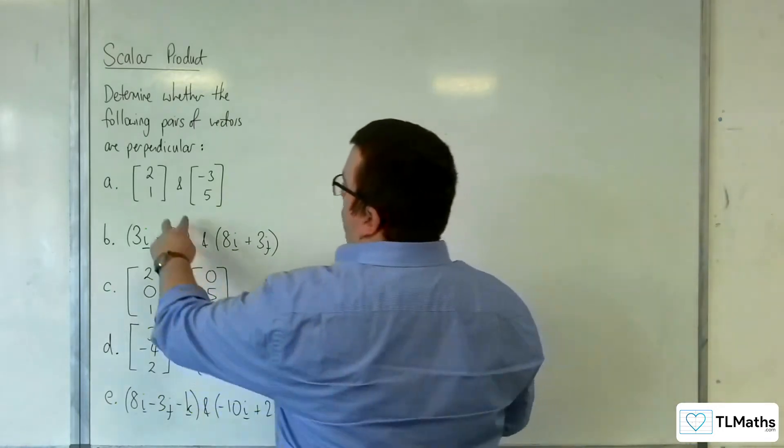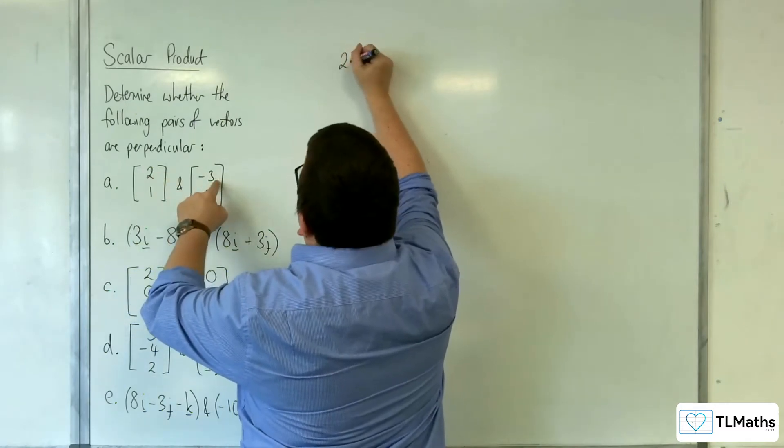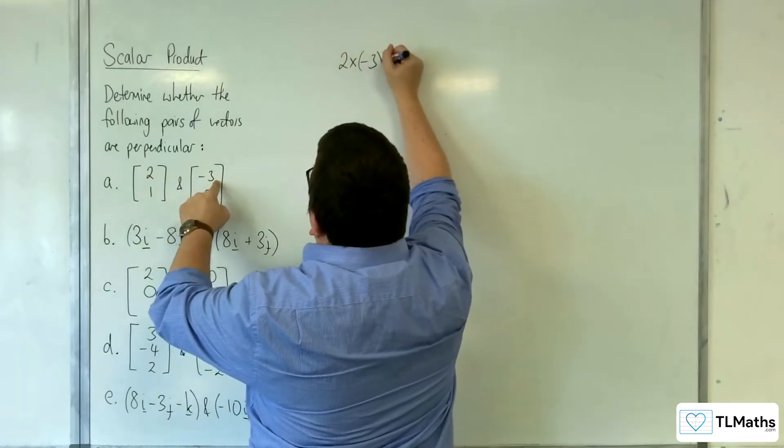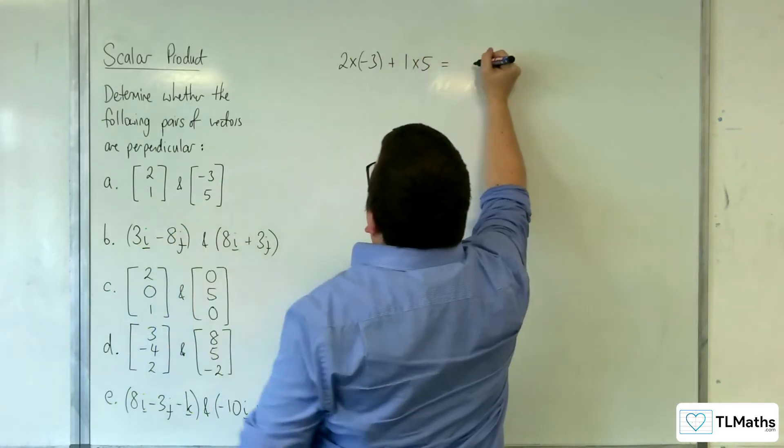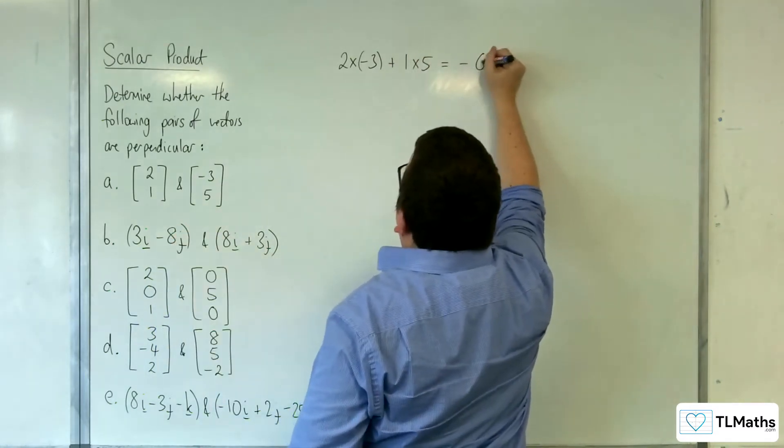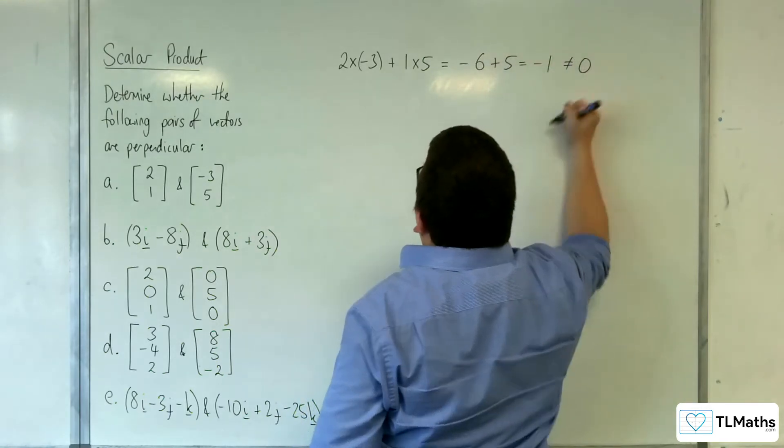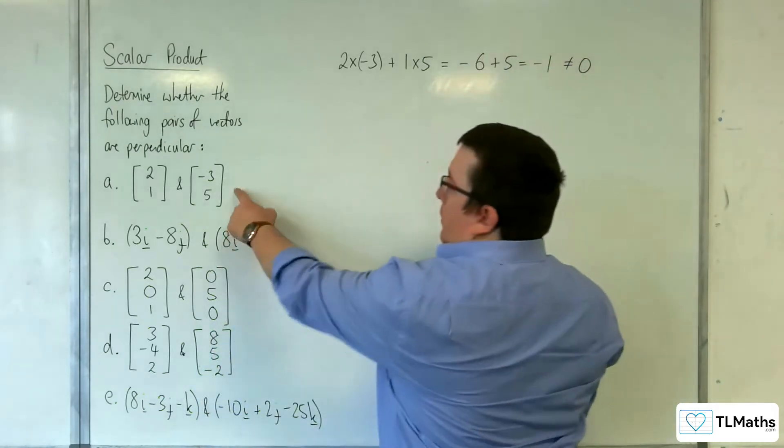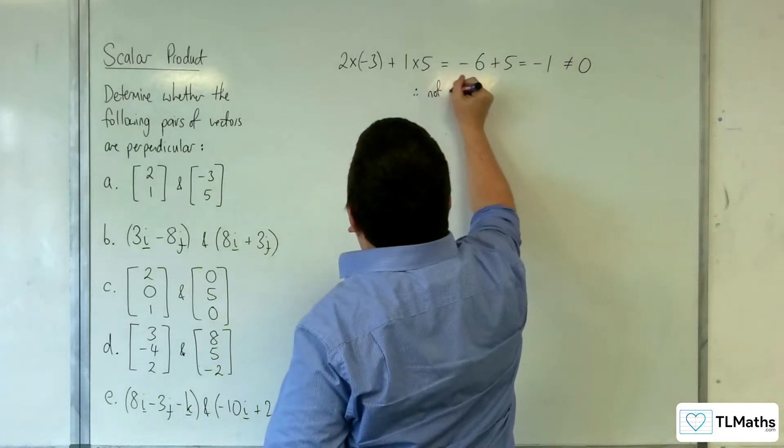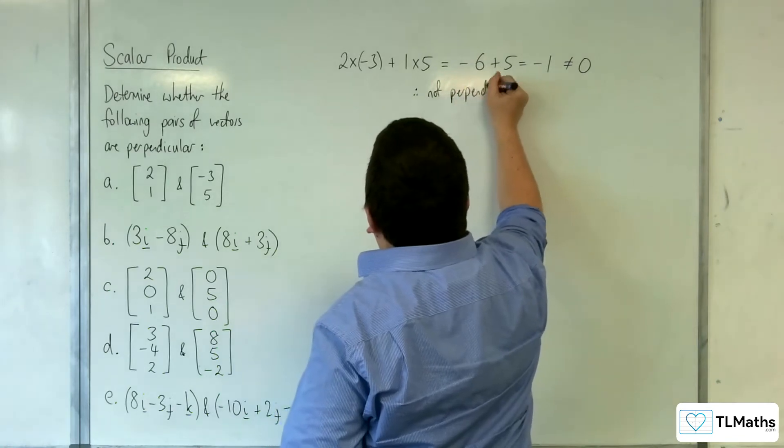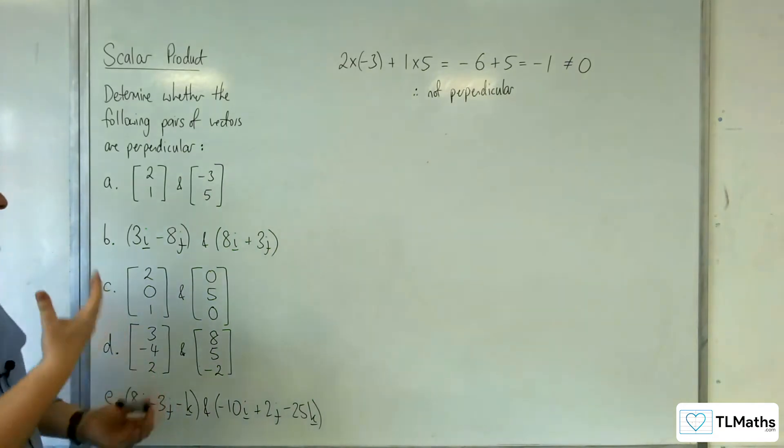So for A, all I need to do is 2 times minus 3 plus 1 times 5. So 2 times minus 3 is minus 6, plus 5 is minus 1, which is not equal to 0. So these are not perpendicular. Therefore, not perpendicular. OK, so that's A.